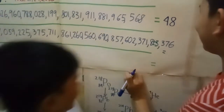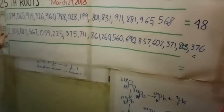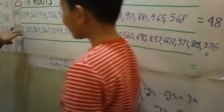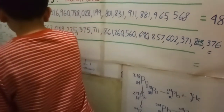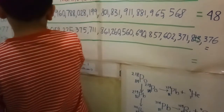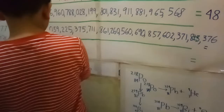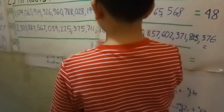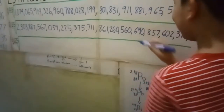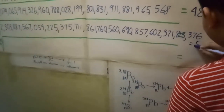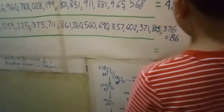Oh my gosh. I won't read it — just read that whole number first. What's the 25th root of that number? Your answer is 86. That's correct.